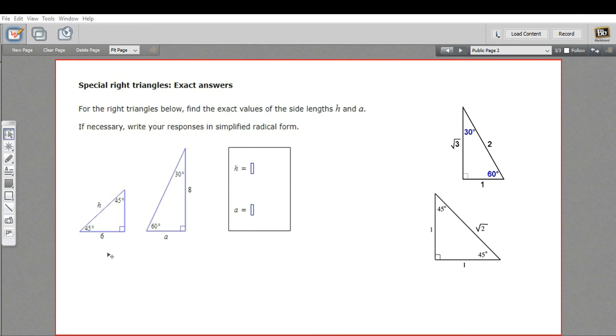In this problem, we are finding sides of special right triangles, and these special right triangles are that 45-45-90 triangle and the 30-60-90 triangle. These are triangles that pop up a lot in geometry problems, so we memorize the ratios of their sides.